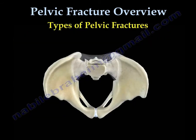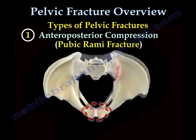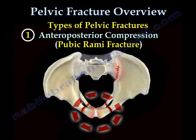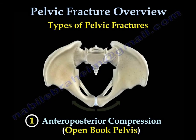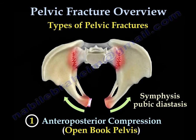Types of pelvic fractures: there are three types — antero-posterior type, lateral compression type, and the vertical shear type. The first type is the antero-posterior compression type. You can have that with a pubic rami fracture, as seen in the slide. Or you can have it as an open-book type, when the symphysis pubis opens up — we call it symphysis pubis diastasis.